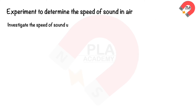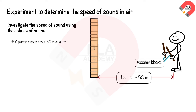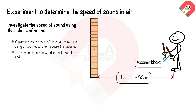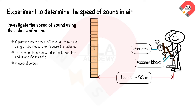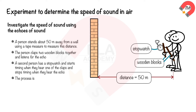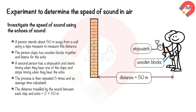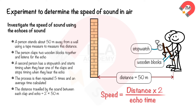Investigating the speed of sound using echoes. A person stands about 50 m from a wall. They clap two wooden blocks together and listen for the echo. A second person times from one clap to its echo. This is repeated five times and an average time calculated. The sound travels 2 × 50 m = 100 m. Speed = (2 × distance to wall) / echo time.